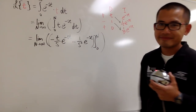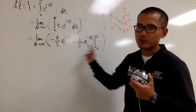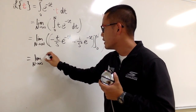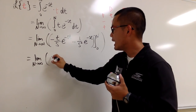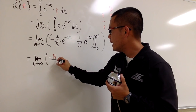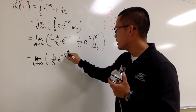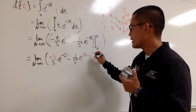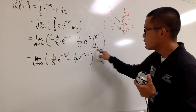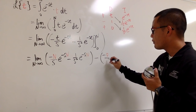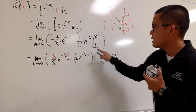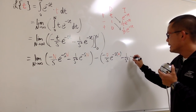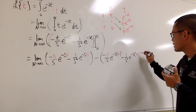We evaluate from 0 to n. Plugging n into all the t's, we get negative n over s times e to the negative sn, minus 1 over s squared times e to the negative sn. Then we subtract the expression with 0 plugged in: negative 0 over s times e to the 0, minus 1 over s squared times e to the 0.